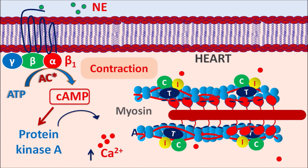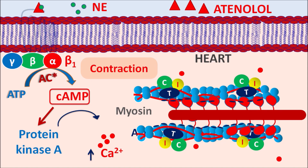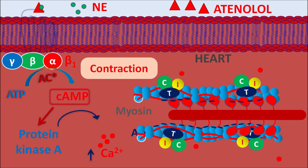In hypertensive patients as well as patients with angina, sympathetic stimulation further increases the symptoms. In such situations atenolol can be used, as it is a selective beta-1 receptor antagonist. Atenolol binds to these beta-1 receptors, thereby inhibiting their activity and leading to cardiac depressant activity. By blocking these beta-1 adrenergic receptors, atenolol reduces cardiac work and cardiac oxygen consumption, and finally also reduces blood pressure. Therefore this drug is used as an antihypertensive as well as an antianginal agent.